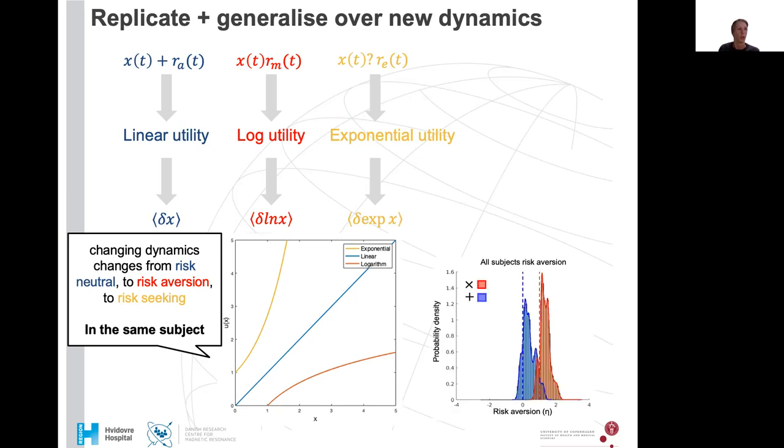So if we look at the data we have acquired so far, we would see whether, as EE would predict, in the exponential utility case, the risk aversion values are centered around minus one. That would be strong evidence in favor of EE.